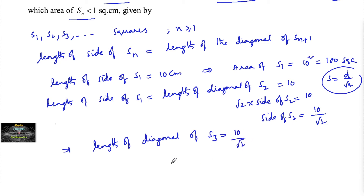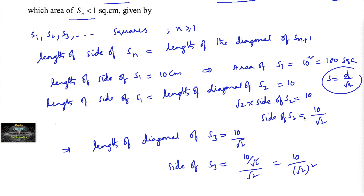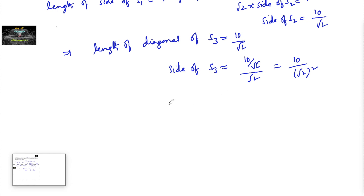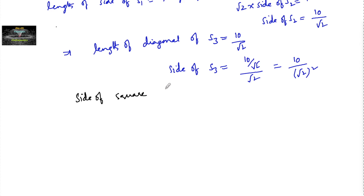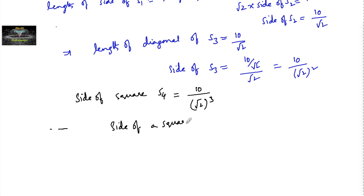If the diagonal of s3 is equal to root 2 times its side, then the side of s3 is 10 by root 2 divided by root 2, that is 10 upon root 2 whole squared. Continuing this process, side of s4 is equal to 10 upon root 2 whole to the power 3, and so on. In general, the side of sn is equal to 10 upon root 2 whole to the power of n minus 1.